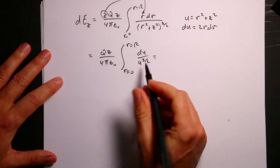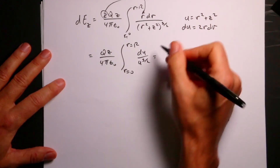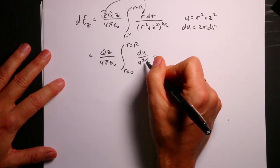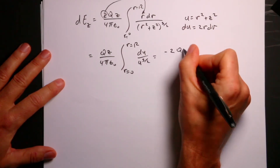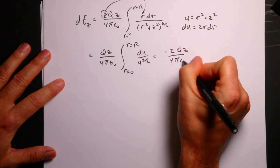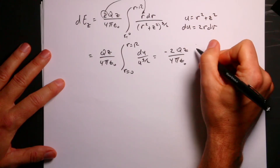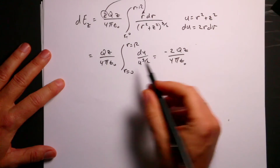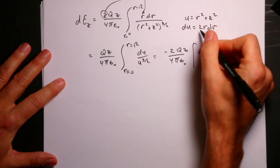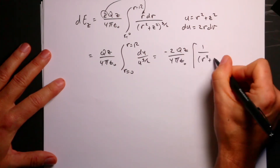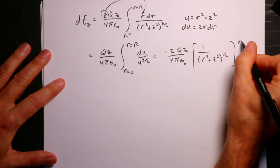I can integrate that — I just add one to the power, so negative three halves becomes negative one half. I need to multiply by negative two to make the integration work, and substituting back I get one over U to the one half, which is one over the square root of r squared plus Z squared, evaluated from zero to big R.